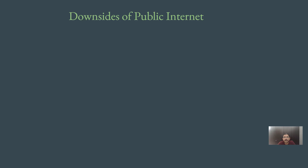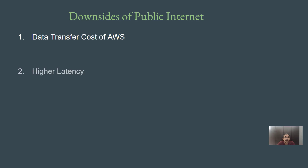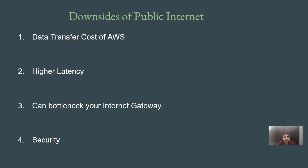This kind of architecture has advantages related to security, lower latency, and lower cost. The downsides of public internet include: first, data transfer cost — communication between AWS resources and the internet incurs higher charges, and with a lot of data you'll get a significant data transfer bill. Second is higher latency. Third is a potential bottleneck at the internet gateway level. Fourth is security — even though AWS services use HTTPS, there have been serious SSL and TLS vulnerabilities, which is why sensitive organizations prefer their data not traverse the internet at all.